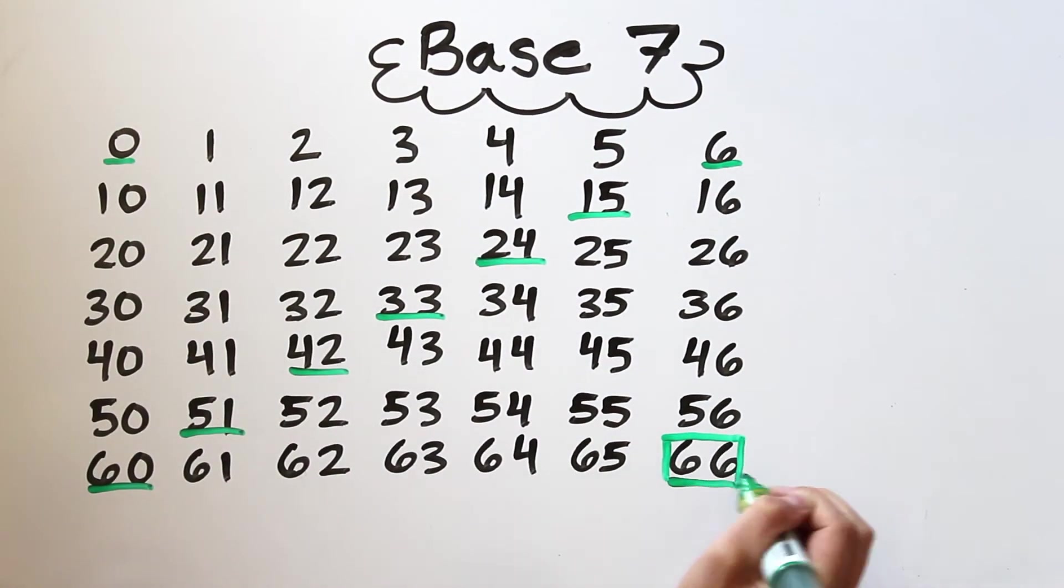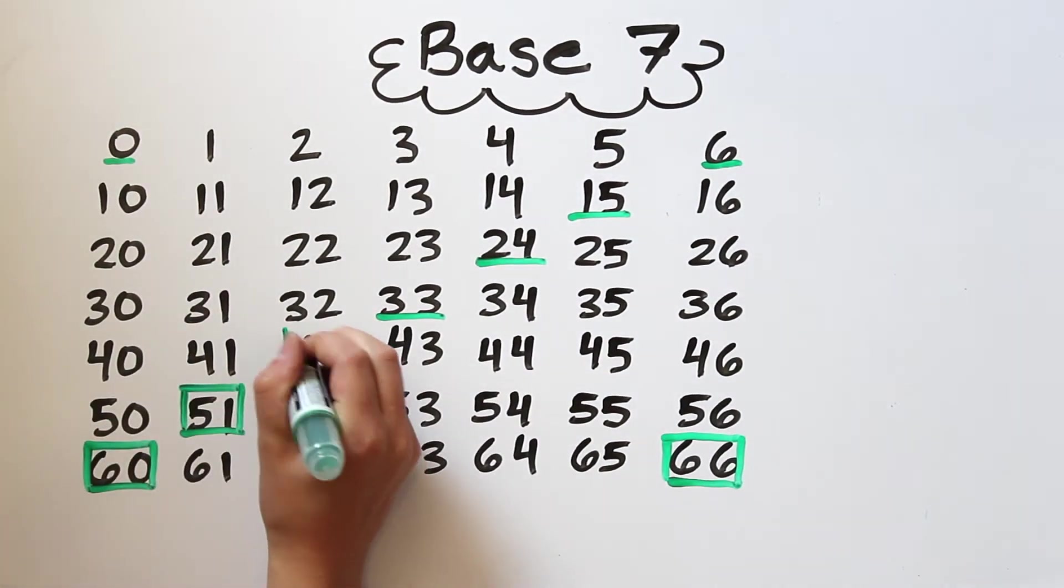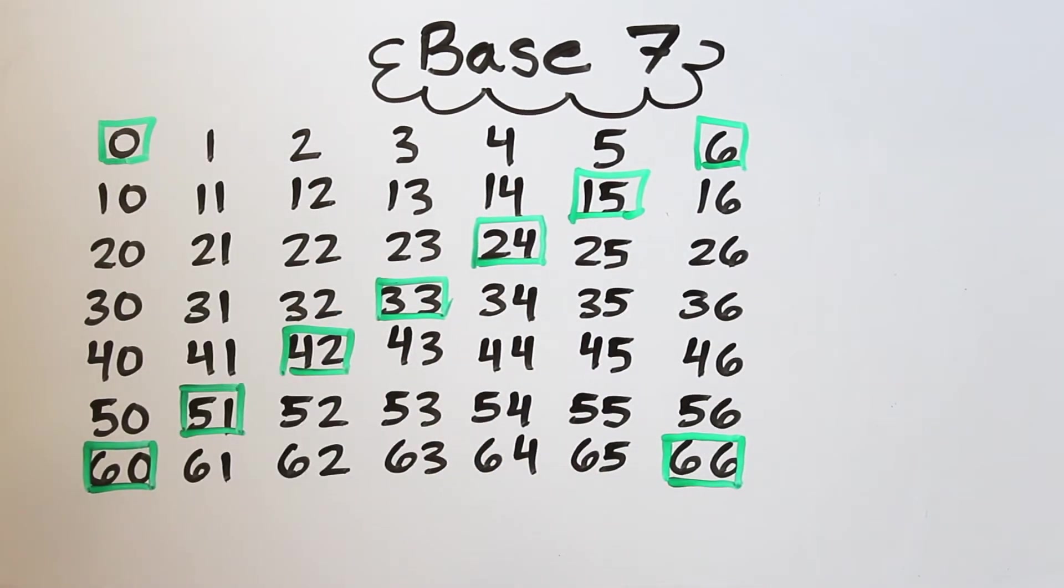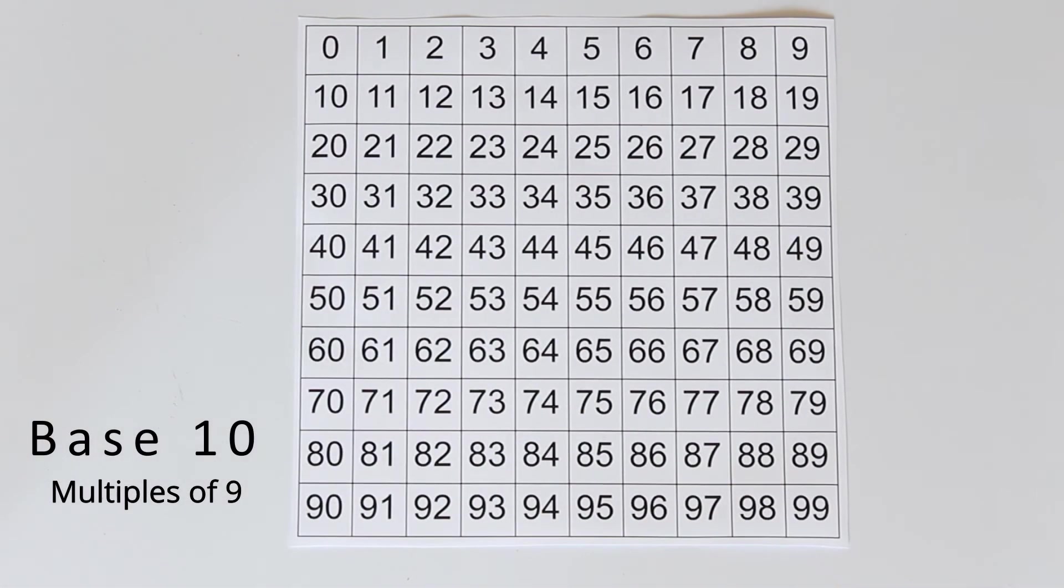Notice that all of these numbers form a diagonal across the grid. That's really interesting! In fact, you may have seen before that the same pattern occurs when we highlight the multiples of 9 in a base 10 grid.